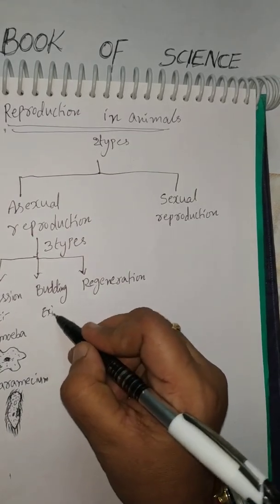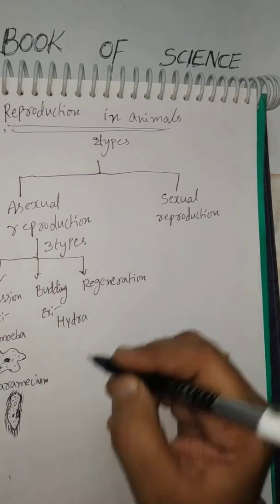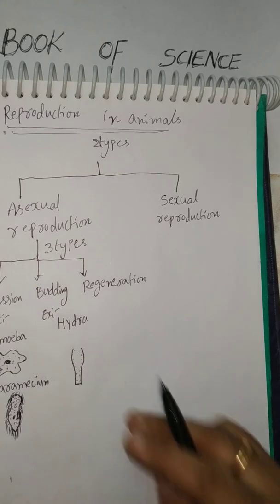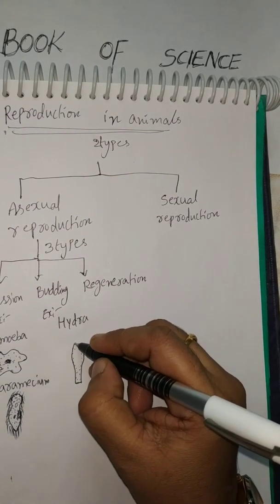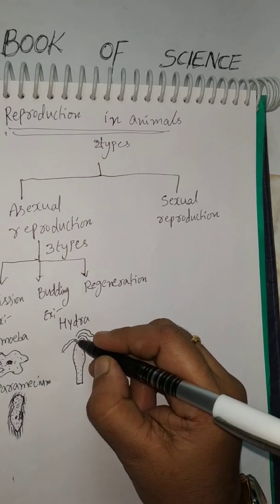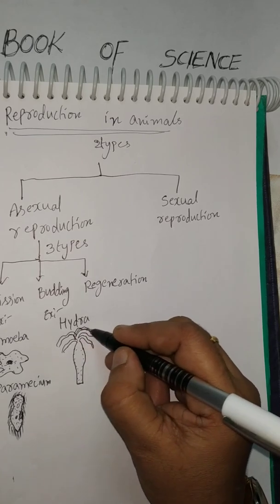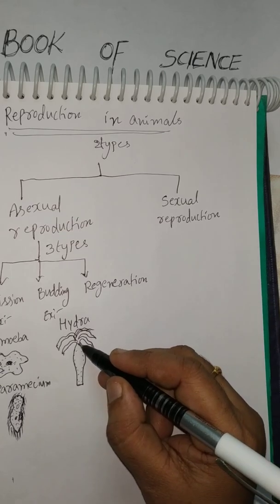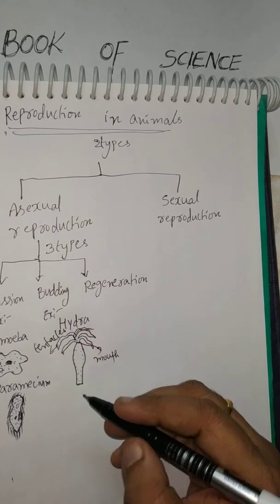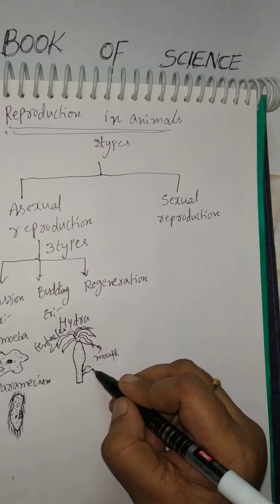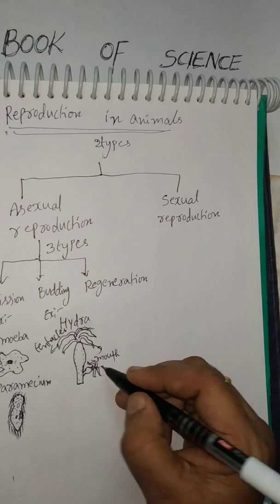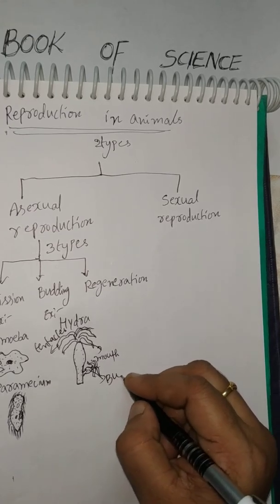Budding example: Hydra. Hydra is a cylindrical shape organism. This is the mouth and these are the tentacles — tentacles are helpful for locomotion, movement, and capturing food. It is an outgrowth of the cell; it makes a bud and the bud grows into a new individual, so this is budding.